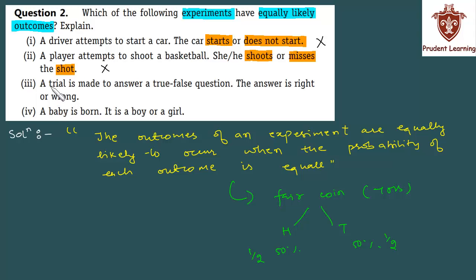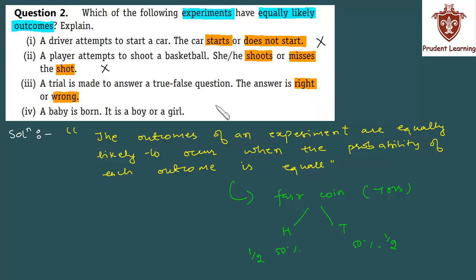Third section: a trial is made to answer a true-false question — the answer is right or wrong. इस case में यह जो outcomes हैं वो equally likely हैं, क्योंकि जब आप किसी true-false question को attempt करेंगे, तो 50% chances हैं कि वो right होगा, 50% chances हैं कि वो wrong होगा. Since outcomes की probability equal है — 50% right होने के और 50% wrong होने के — इसलिए यह equally likely outcomes हैं. तो यहाँ tick mark लगा देता हूँ.